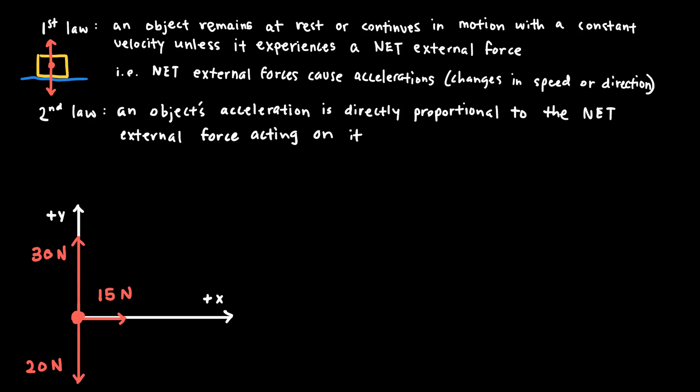If an object experiences a net external force it can change speed or change direction, which is an acceleration. Newton's second law says that an object's acceleration is directly proportional to the net external force acting on it. A net force causes an acceleration, and the magnitude or strength of that net force determines what the acceleration will be.